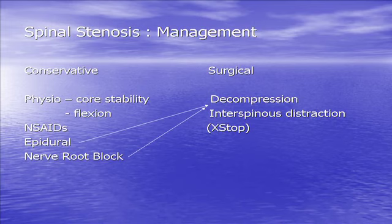So what do we do? You can treat conservatively — tell them to flex, rotate, do core stability. Sometimes it helps, but over time it gets to the stage where it doesn't. You can use non-steroidal anti-inflammatories, use an epidural nerve root block to specify one level. If surgery is needed, would that go on to a decompression? There are other procedures — one that Mr Wheeler was using was an interspinous distraction, the X-Stop procedure, where essentially a small jack is placed between the two posterior spinous processes to jack it up.